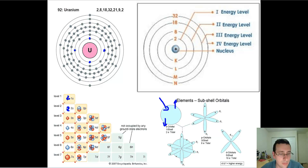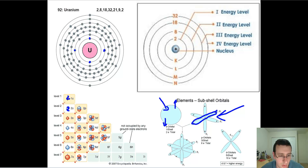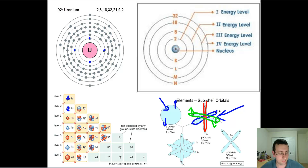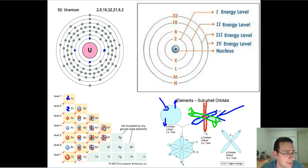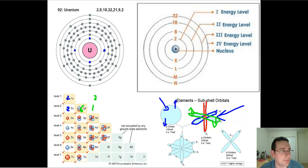The second layer has a second sub-shell called the P sub-shell. The P sub-shell has three orbitals, and each P orbital can hold two electrons — one spinning upward and one spinning downward — just like the S orbital. Since there are three P orbitals, a total of six electrons can fit in the P sub-shell. Adding the two from the S sub-shell gives a total of eight electrons in the second layer, bringing the running total to ten electrons placed.